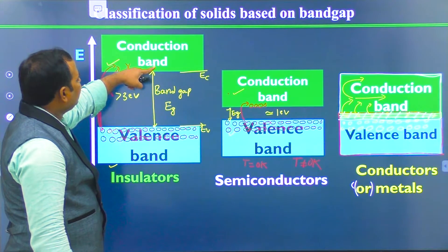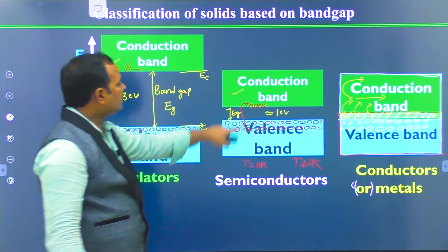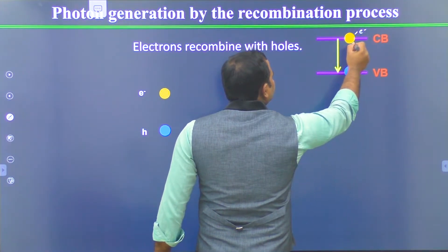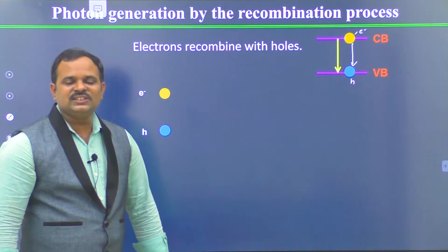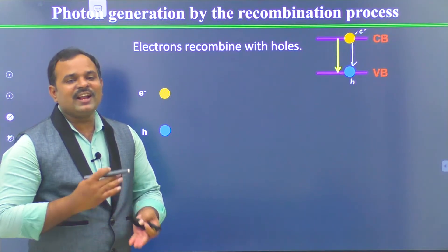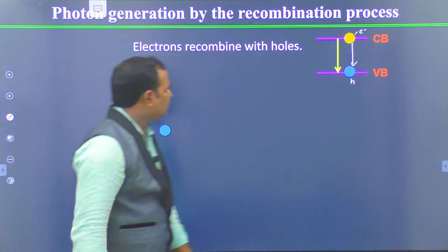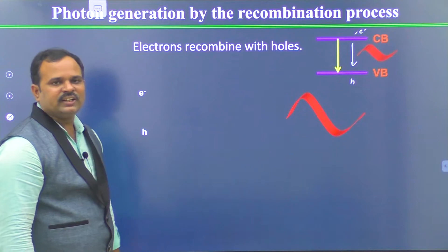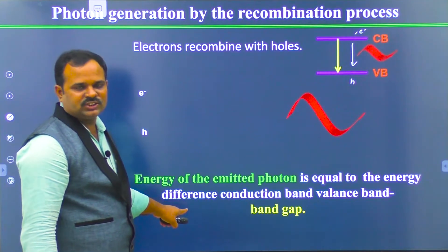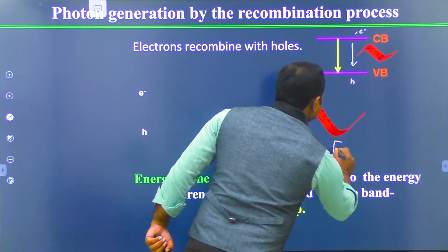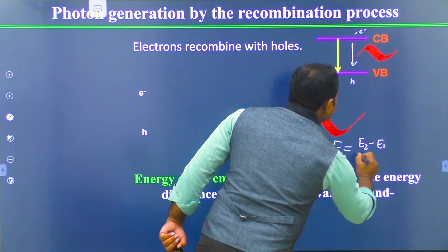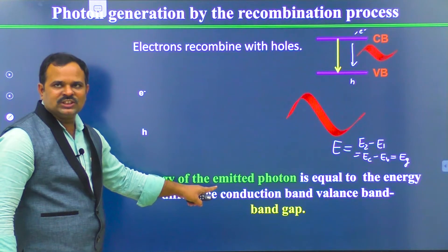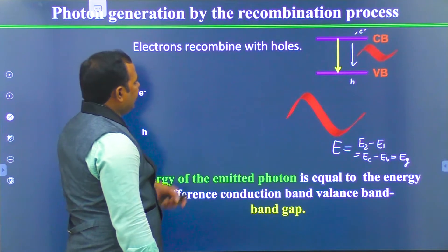Now what happens when an electron is de-exciting from the conduction band to the valence band? That means when an electron is recombining with a hole, it releases energy. Whenever an electron jumps from a higher energy level to a lower energy level, it releases energy in the form of photons. This is called a recombination process — the electron recombines with a hole and produces electromagnetic radiation, called electron-hole pair recombination. The emitted photon energy E equals EC minus EV, which is equal to EG. That means the emitted photon will have energy equal to the bandgap energy.